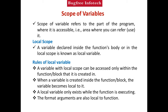Next topic: scope of variables. Let's see what local scope means. A variable defined inside a function block is called a local variable. Local variables can only be accessed within the function block where they are created. Once the function executes, the local variable is also executed within that scope. This is the rule of local variables.